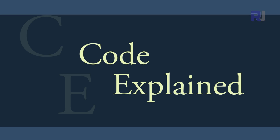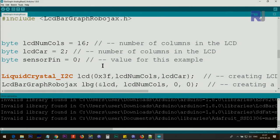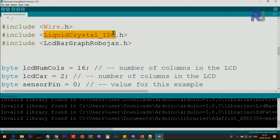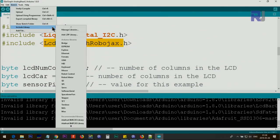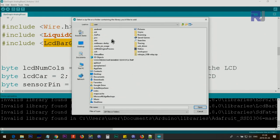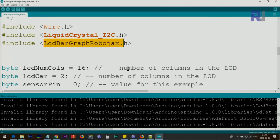Let me now explain the code. You need to download the LiquidCrystal I2C library. The link will be provided. You will download it as a zip file, and also the link will be provided for LCD bar graph Robojax. You have to install them one by one. Click on sketch, include library, add zip library, then point it to where you have saved it. Do this for both of these.